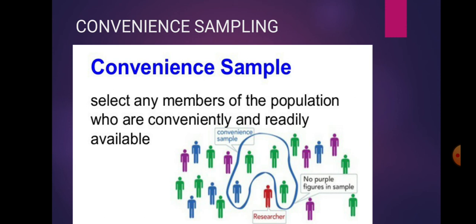Here it is clearly written: select any member of the population who are conveniently and readily available. You can see in the example many people who belong to green, purple, blue, and red categories. The researcher is applying convenience sampling - she is selecting from whatever categories are conveniently available, like three from green category, two from blue, and one from purple.